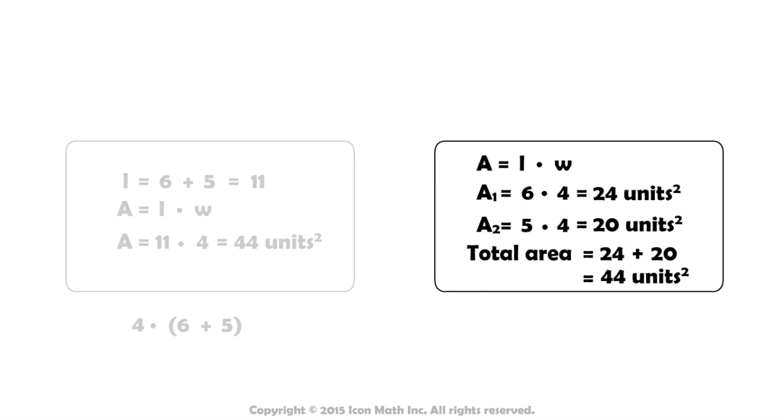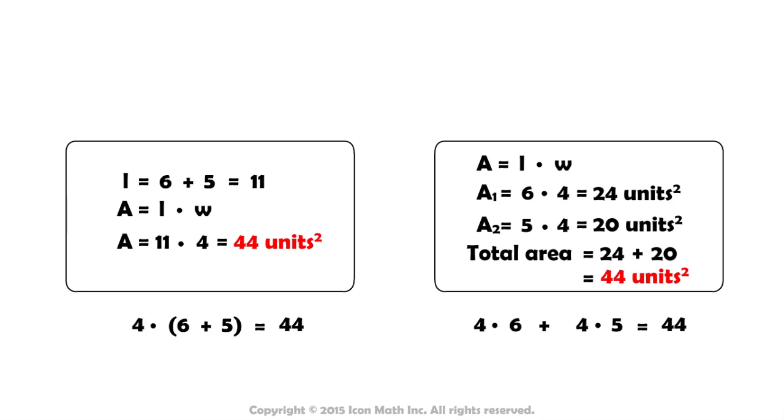In method 2, we multiplied 4 times 6 and 4 times 5, then added the result. Because we found that both methods equaled 44, we know that 4 times (6 plus 5) is equal to 4 times 6 plus 4 times 5.